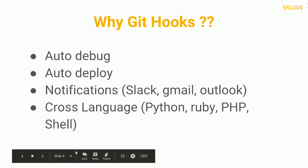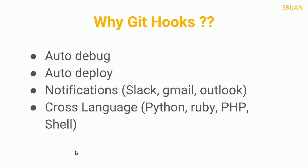First is auto-debug. It will debug your code automatically using PHP CS, PHP Lint, or a set of rules you provide into the hook. Next is auto-deploy — it can help you for deploying your code on master using post hooks. Notifications — you can get notified when your code is updated via Slack, Gmail, Outlook, whatever you want to integrate.